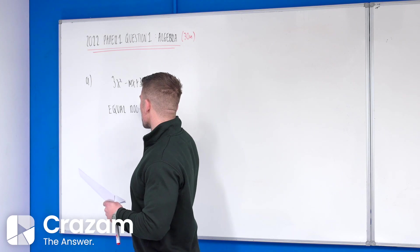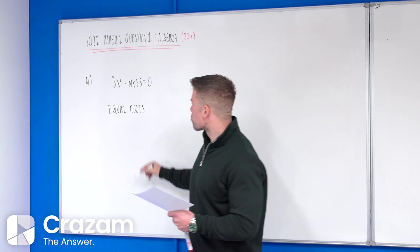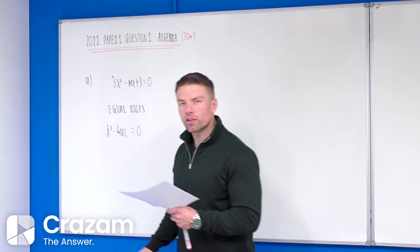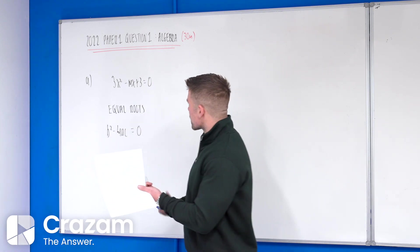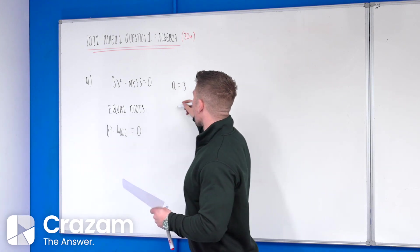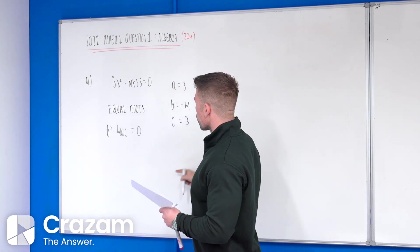It means the solutions are the same as the quadratic and must have equal roots, which means that the discriminant b squared minus 4ac must equal to 0. If we fill this out, we can see here that our A is 3, our B is minus m, and our C is also 3.